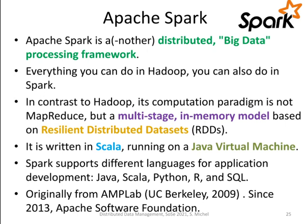Multi-stage means that you can have multiple iterations — for instance, also a loop over the data in multiple steps within one Spark job. This is in contrast to Hadoop, where you had to implement several MapReduce Hadoop jobs one after the other to connect the computation over different rounds.